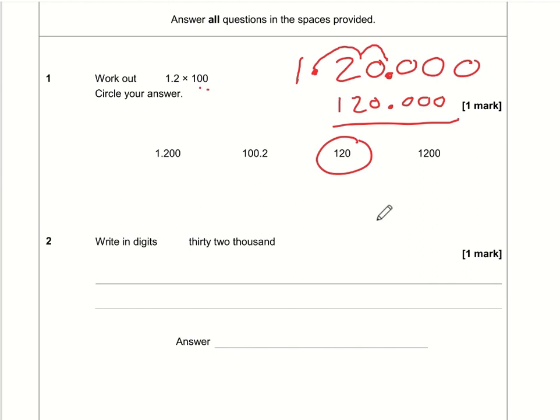Write in digits thirty two thousand. Well, hopefully you know that 1,000 is one with three zeros, so 32,000 is 32 with three zeros, with a space or a comma in between.